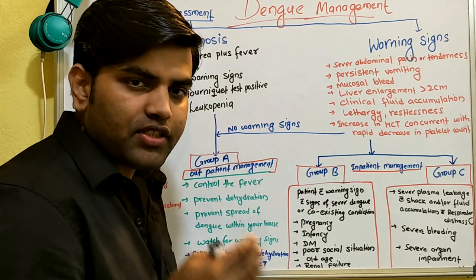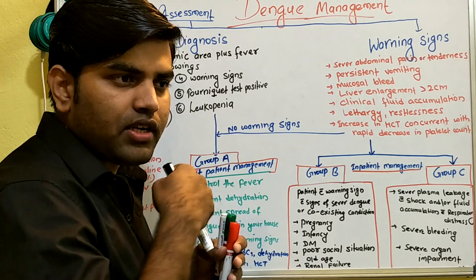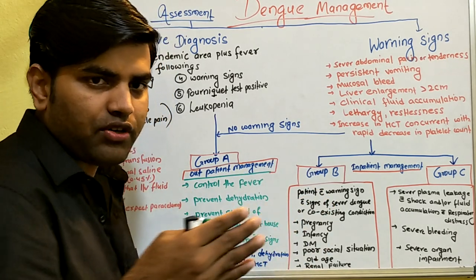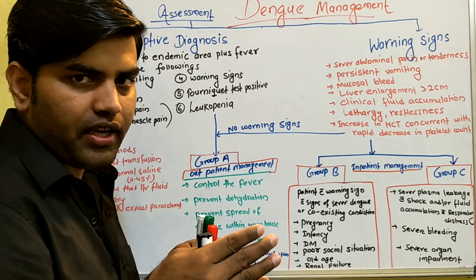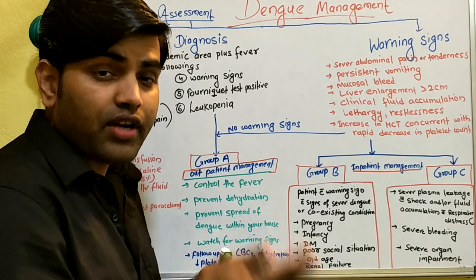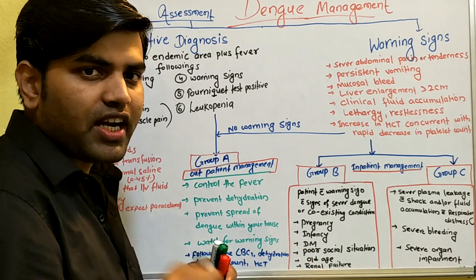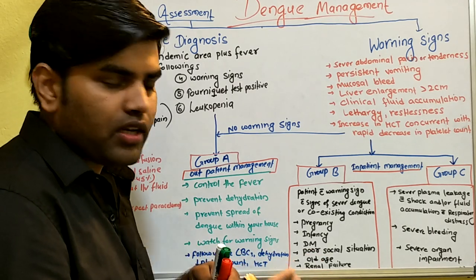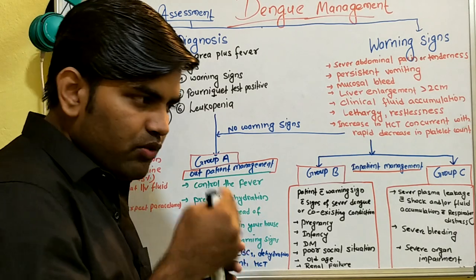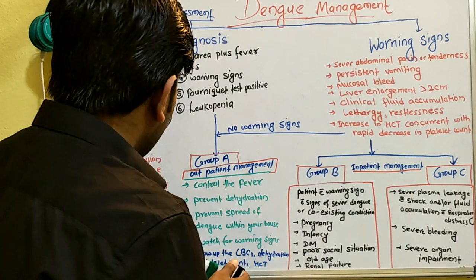To recall from a previous lecture: in 1997, dengue was classified as dengue fever, dengue hemorrhagic fever, and dengue shock syndrome. In 2009, the classification was revised to dengue without warning signs, dengue with warning signs, and severe dengue. We classify our patient into these groups and manage accordingly.